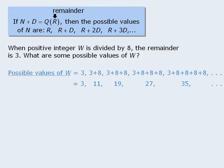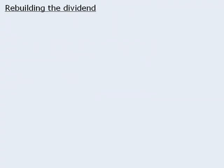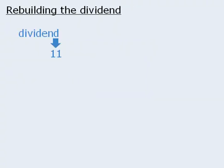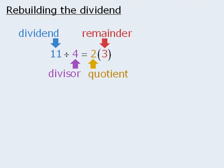Alright, the next important technique is to rebuild the dividend. Here's what I mean. If we take the dividend 11 and divide it by 4, we get a quotient of 2 with remainder 3. Now we can take these three values and use them to create an equation that ends up equaling the dividend of 11. We can write 2 times 4 plus 3 equals 11.